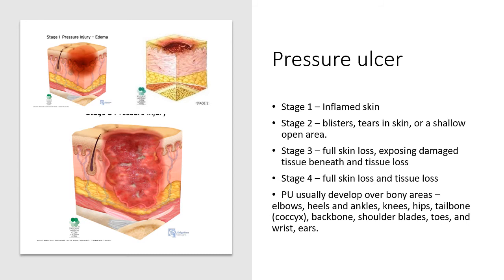Pressure ulcers usually develop over bony areas — bony prominences and pressure areas — including elbows, heels and ankles, knees, hips, tailbone, backbone, shoulder blades, toes, wrists, and ears.